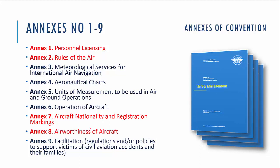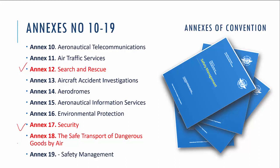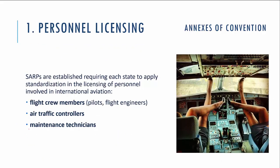Now let's turn to the annexes signed together with the main ICAO contract. There are 19 annexes in total. For the PPL level, you need to know Annex 1 — personnel licensing, Annex 2 — rules of the air, Annex 7 — aircraft nationality and registration marking, Annex 8 — airworthiness of the aircraft, Annex 12 — search and rescue, Annex 17 — security, and Annex 18 — the safe transport of dangerous goods by air. You don't need to know these annexes word for word, but you need to understand the main ideas.